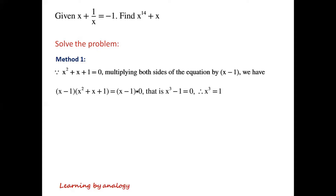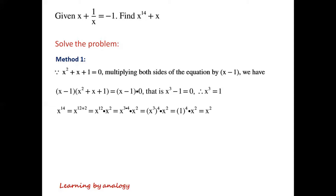This gives us x cubed minus 1 equals 0, so x cubed equals 1. We can then write x to the power of 14 as x to the power of 12 plus 2, which equals x to the power of 12 times x squared, which equals x cubed to the power of 4 times x squared equals 1 to the power of 4 times x squared equals x squared.